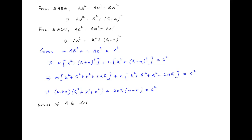The locus of point A with coordinates (h, k) is determined by replacing h with x and k with y in the above equation. Therefore, the locus of A is (m + n) times (x² + y²) + a² plus 2ax times (m - n) is equal to c².